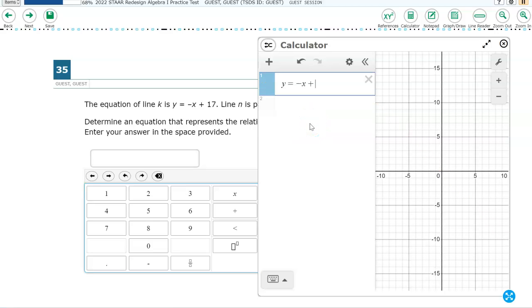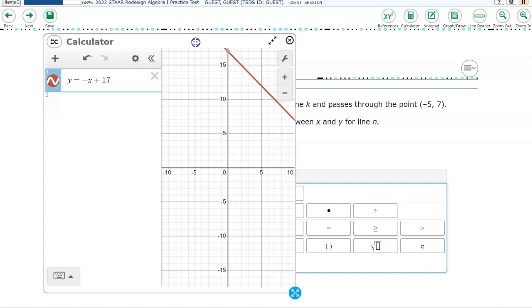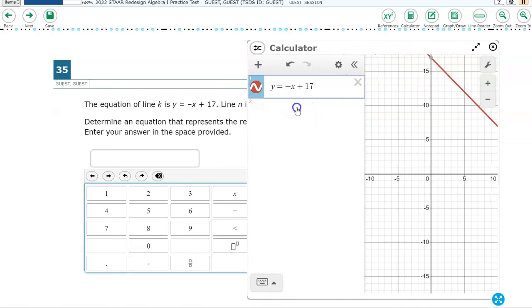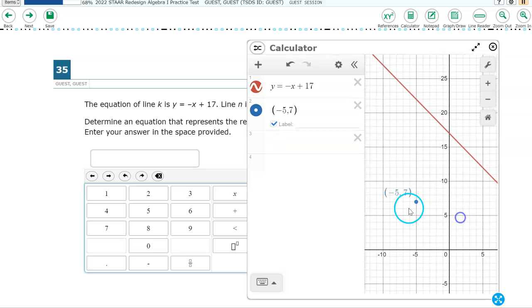Y equals negative X plus 17. And then I need it to go through the point negative 5, 7. So I'm going to do negative 5, 7 in parentheses. And then where it says label, you're going to check that box. And so now my goal is to write an equation for a line that will intersect negative 5, 7, but be parallel to this line.